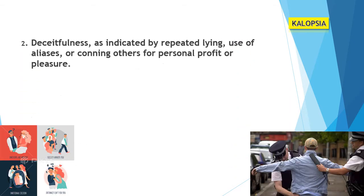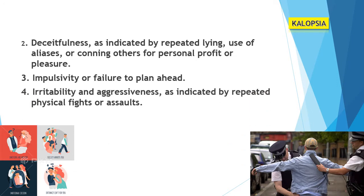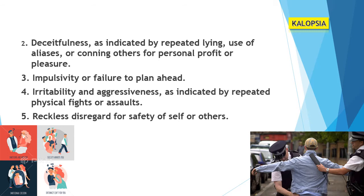Second: deceitfulness, as indicated by repeated lying, use of aliases, or conning others for personal profit or pleasure. Third: impulsivity or failure to plan ahead. Fourth: irritability and aggressiveness, as indicated by repeated physical fights or assaults. Fifth: reckless disregard for the safety of self or others.